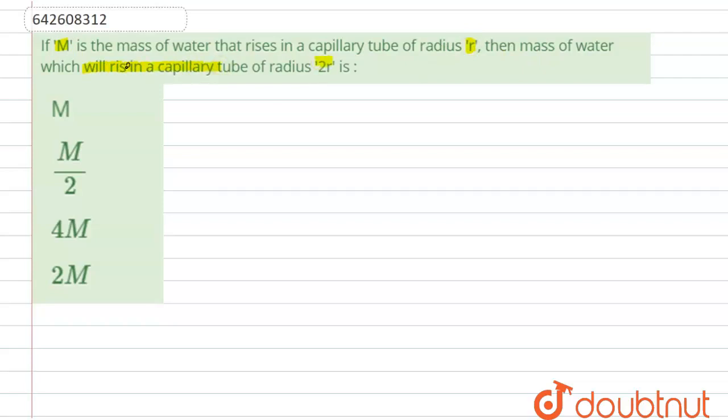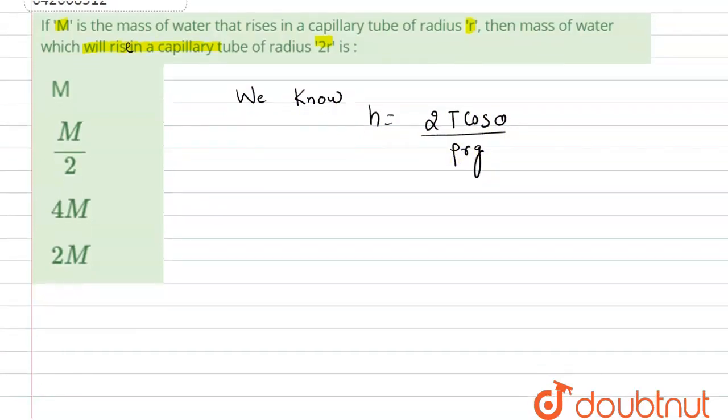So in this question, this problem is based on capillarity. We know the formula to find the height in a capillary tube that is h equals to 2t cos theta divided by rho r g, where t is tension and theta is the angle of the meniscus. So we know height is inversely proportional to r, the radius.